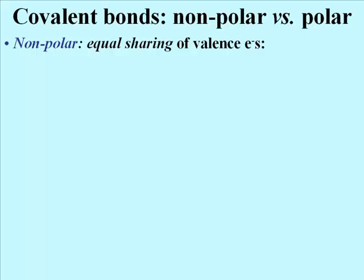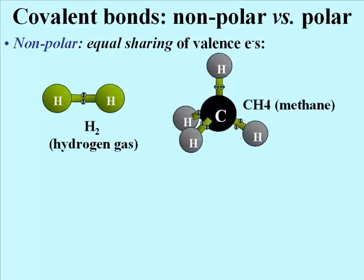When atoms share their valence electrons equally, they form non-polar covalent bonds, as in the hydrogen and methane gas molecules shown here.